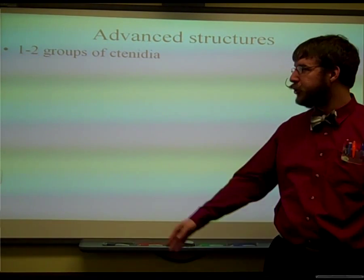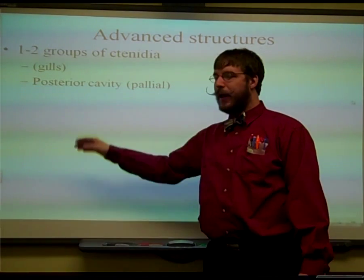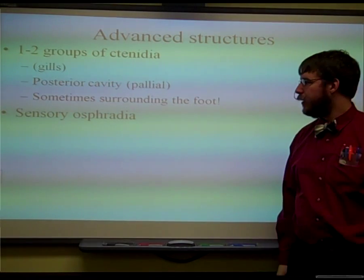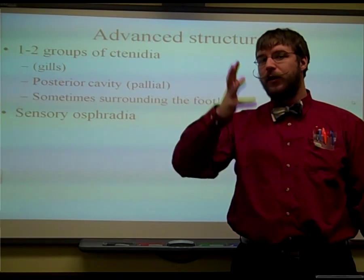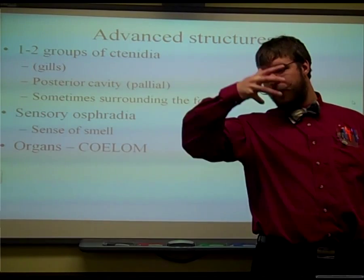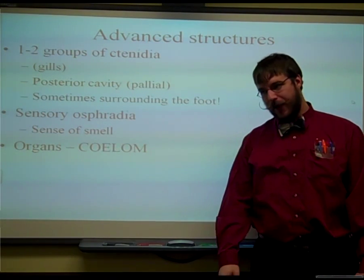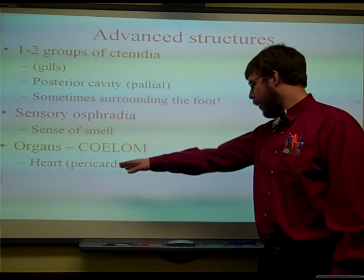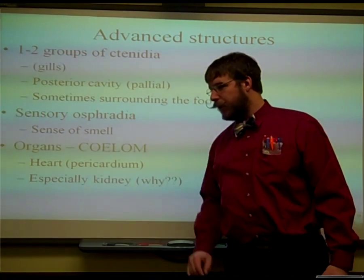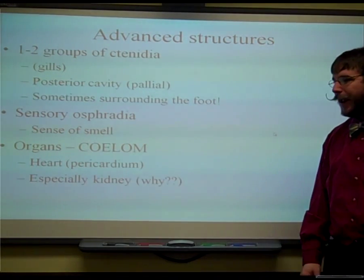Let's look at some of the advanced structures of molluscs. They have one or two groups of ctenidia, which are weird, modified, very basal gills. They also tend to have a posterior cavity — posterior means towards the rear — and sometimes that cavity is actually surrounding the foot. They have different sensory organs called osphradium that they use to detect their environment and are used for smell. Some molluscs even have very simple eyes. They're coelomates with a body cavity, and they have a heart surrounded in a sac called the pericardium — peri means around, cardi means heart. They also tend to have very nice kidneys for osmoregulation in salt water.